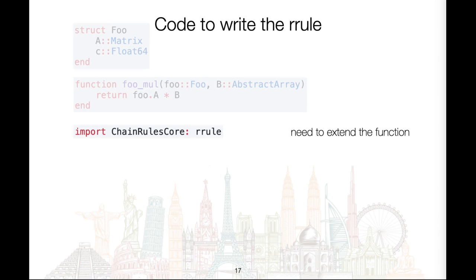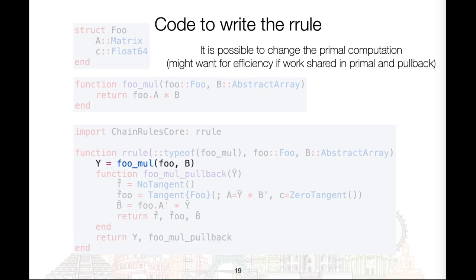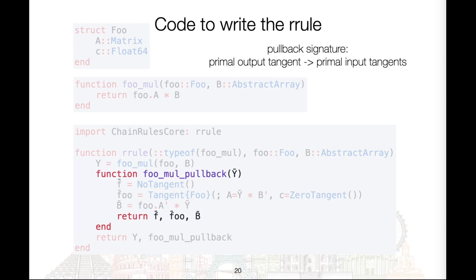To add a method for the rrule we have to import it from ChainRulesCore. Just to remind you of the signature: the rrule dispatches on the type of the function and the arguments of the function, and returns the primal result as well as a pullback. I'd also like to point out that it is possible to change the primal computation — we might want to do that for efficiency reasons, for example when work is shared between the primal and the pullback, such as computing the inverse of some matrix. The signature of the pullback is that it takes the derivative of the primal output and returns the derivatives of the primal inputs.